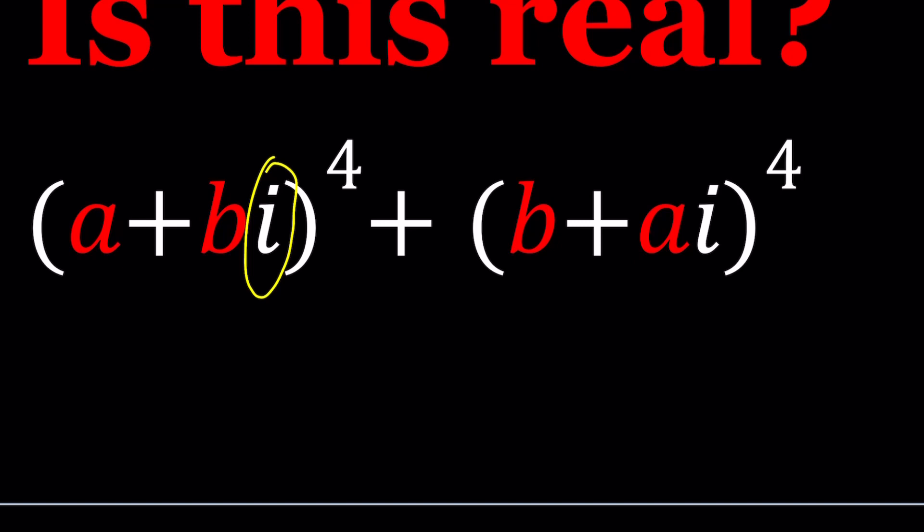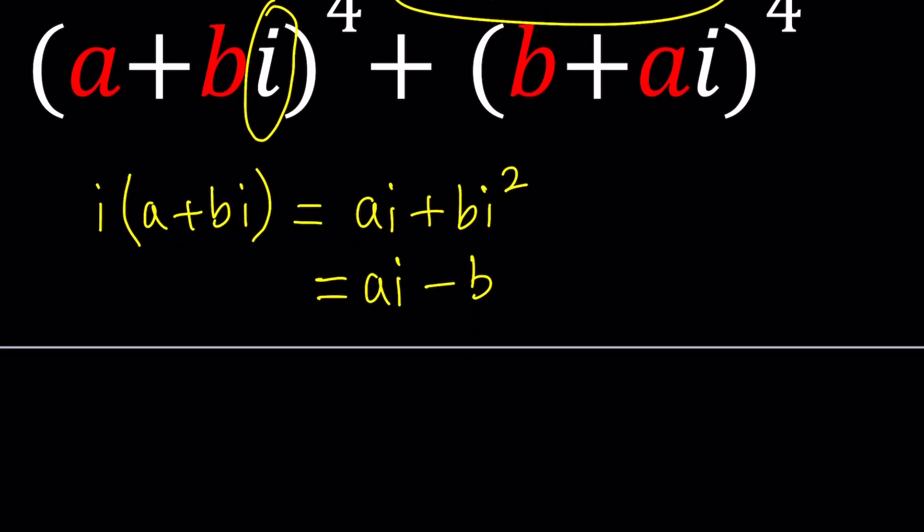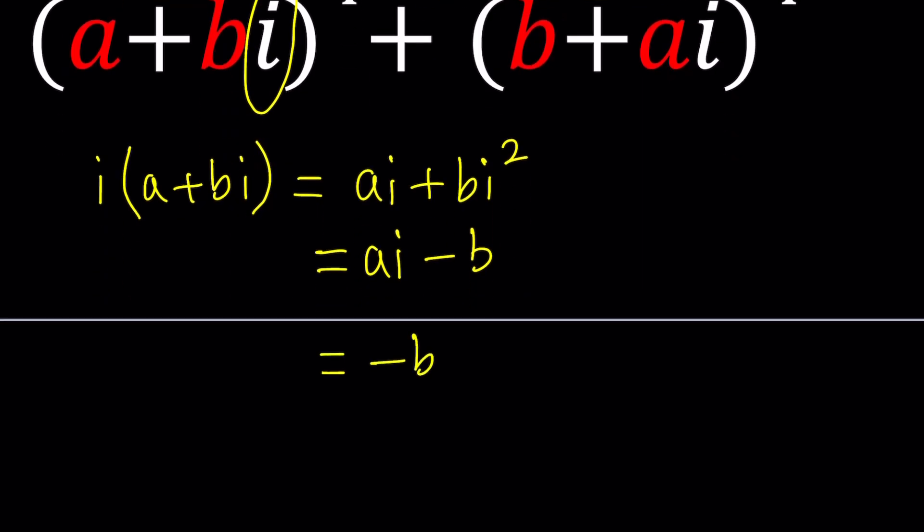Because if you take a vector and rotate it 90 degrees the a and b coordinates kind of switch around. Let's take a look. So I'm going to multiply a+bi by i to give it a rotation and that's going to give me ai plus bi squared. Remember i squared and never ever forget that i² = -1. That's very important.